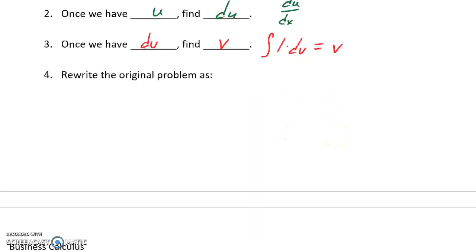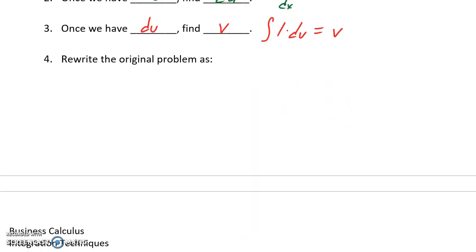Once we have those pieces, we'll rewrite our integration problem as uv minus the integral of v du. So we need to identify u and dv, and then from there we'll find du and v, which we can substitute into this formula.